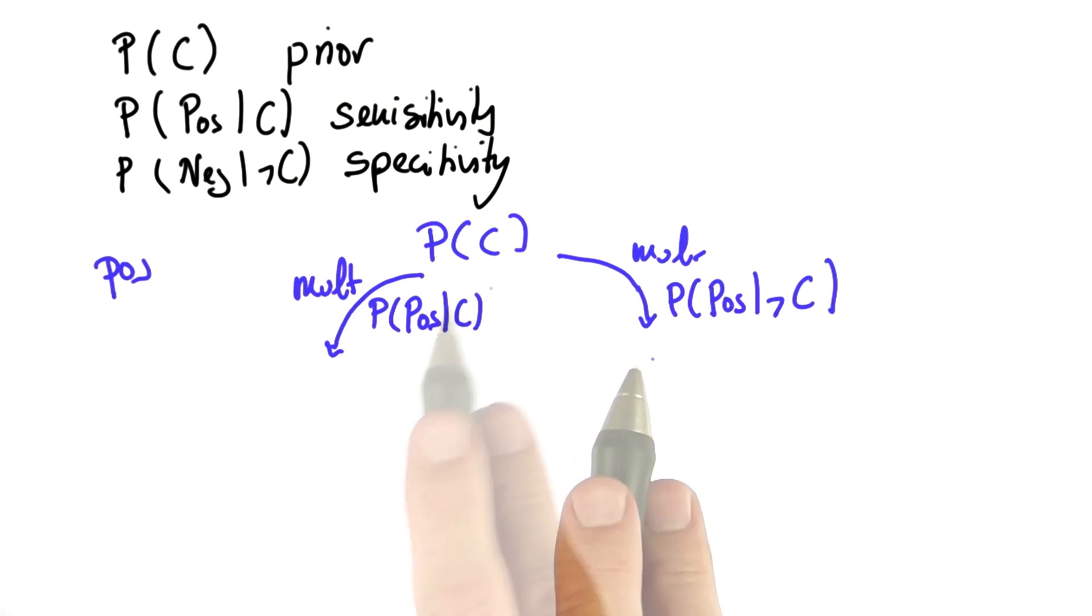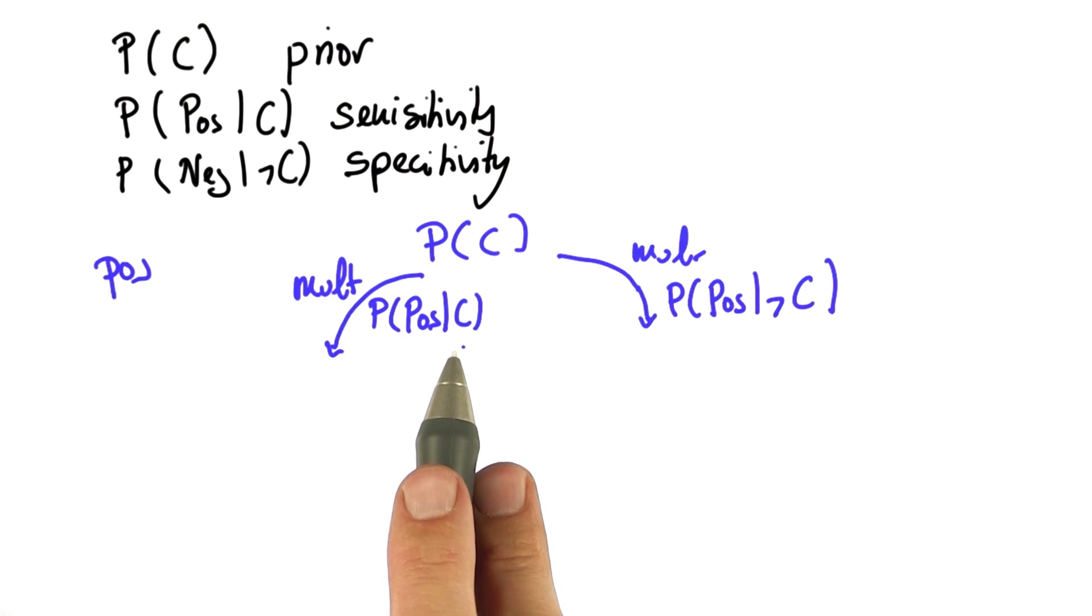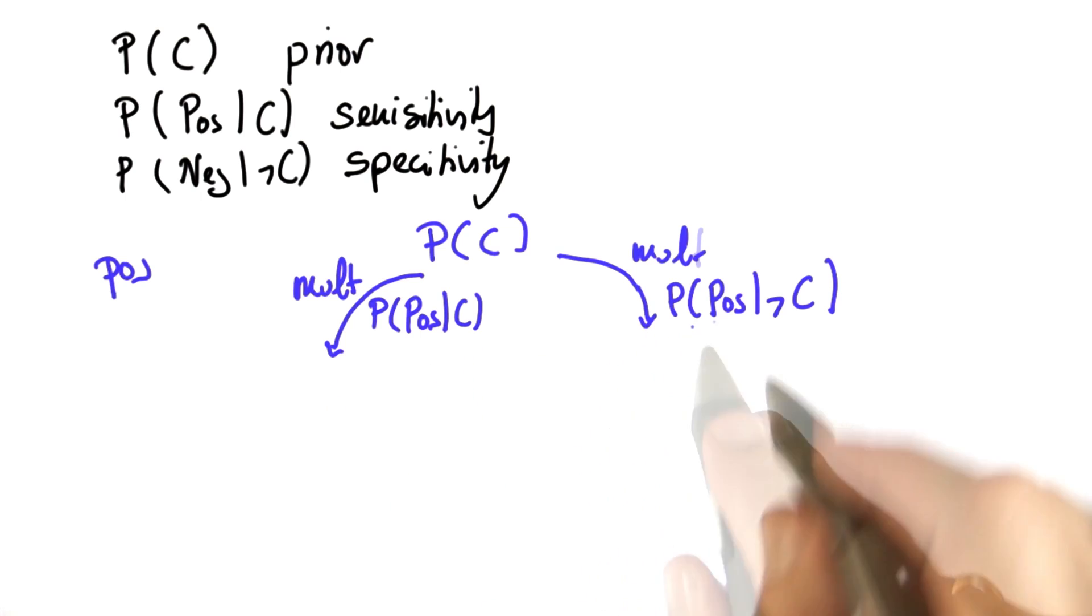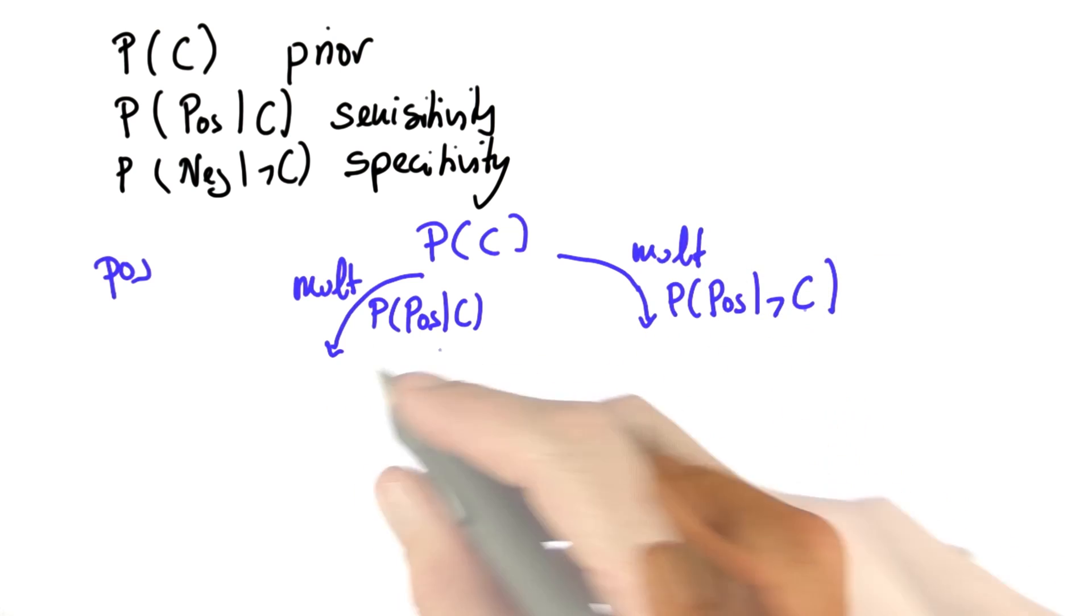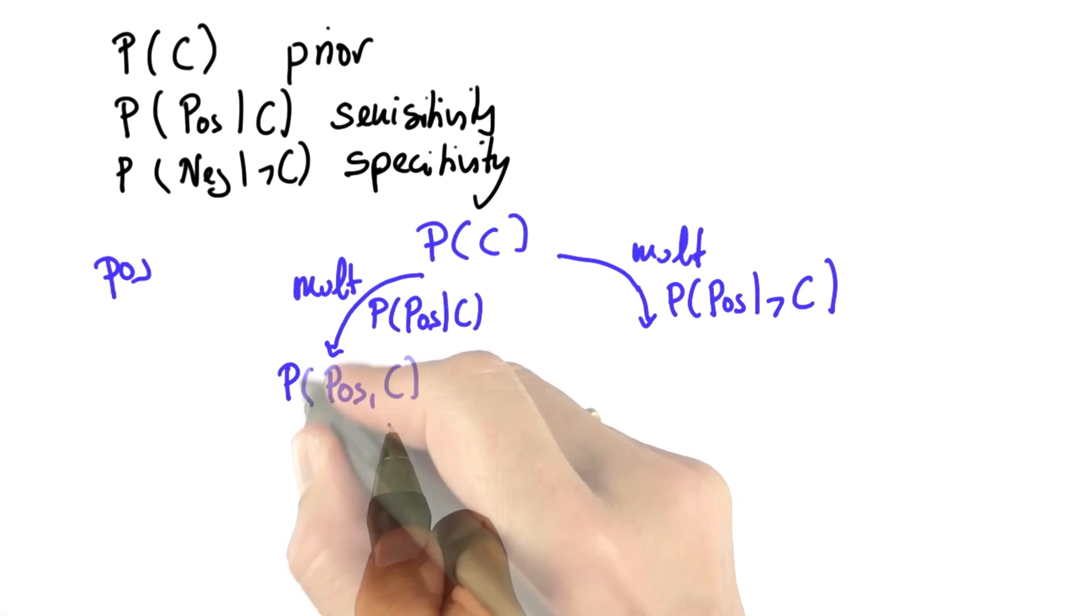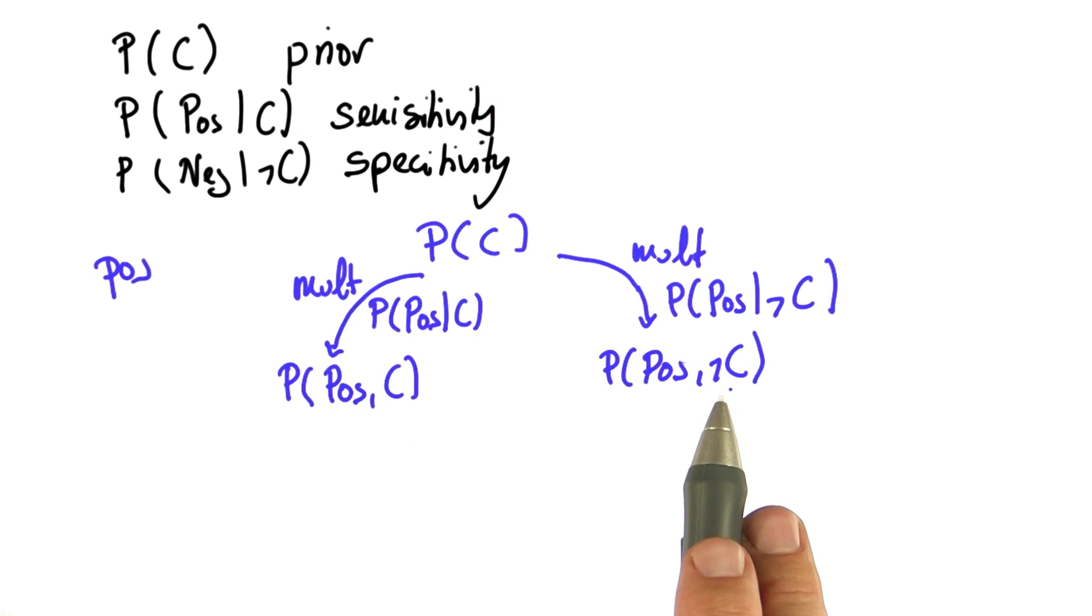This is your branch for the case that you have cancer. This is your branch for the case you have no cancer. When you're done with this, you arrive at a number that combines the cancer hypothesis with the test result, both for the cancer hypothesis and the not cancer hypothesis.